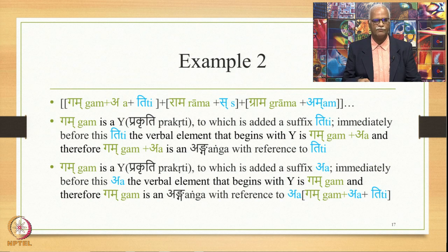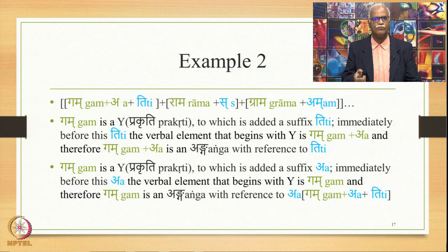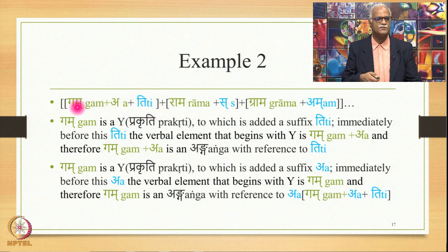If I ask you to describe an Anga in a particular context, you should identify the Pratyaya being referred to. The next question should be: with reference to which Pratyaya? X is Anga with reference to what? That Pratyaya needs to be specified. If that Pratyaya is T, then Gam + A becomes the Anga. If that Pratyaya is A, then only Gam becomes the Anga.